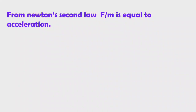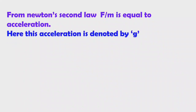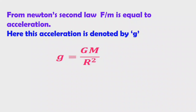F by m equals acceleration. Here this acceleration is denoted by small g — in place of small a, we write small g. This is free fall acceleration. So we get: small g equals G M by R square. Small g is the free fall acceleration, G is the universal gravitational constant, M is the mass of the earth, and R is the radius of the earth.